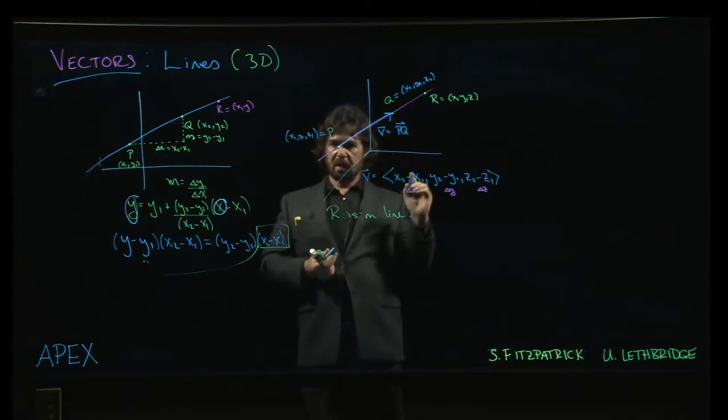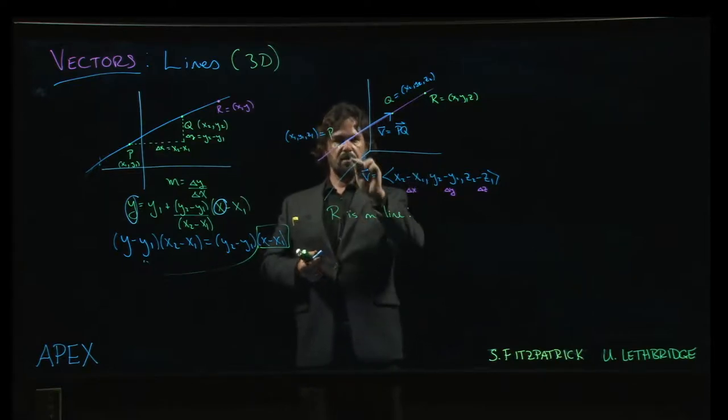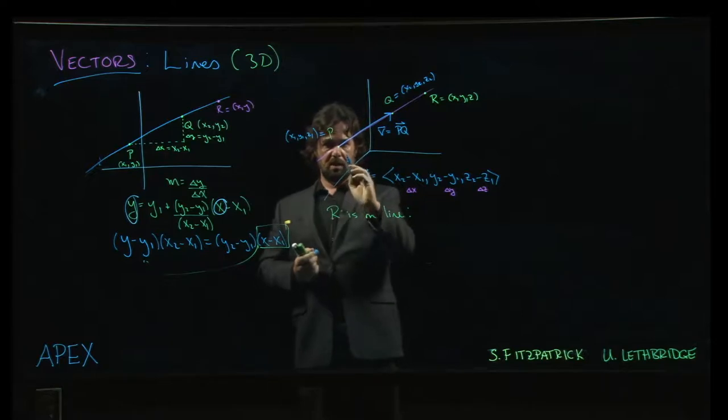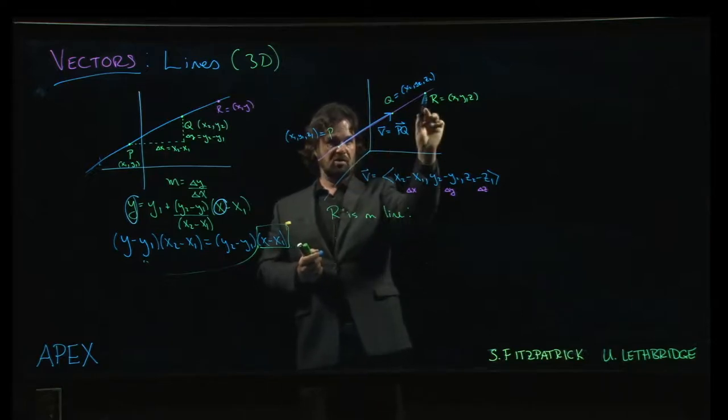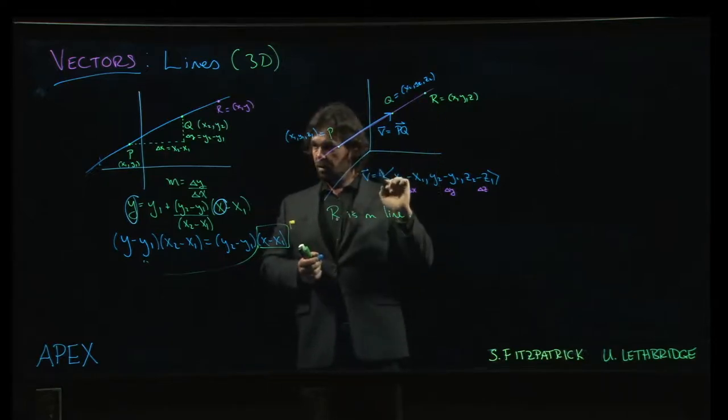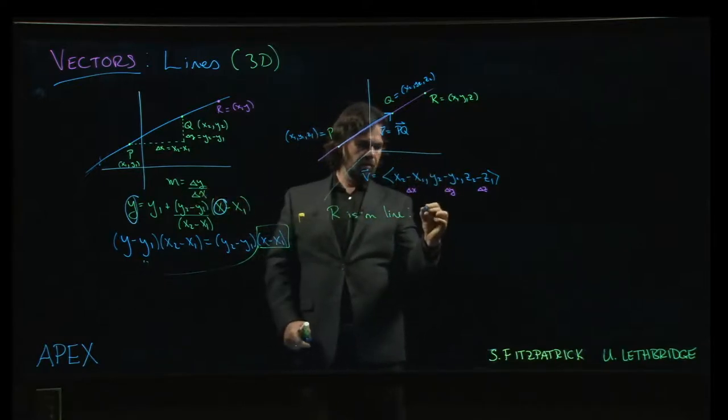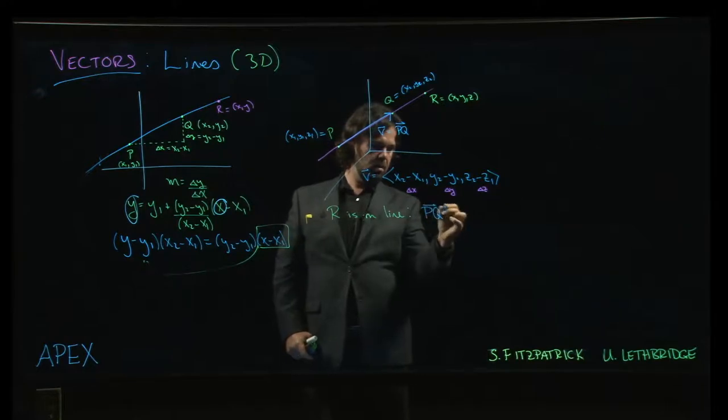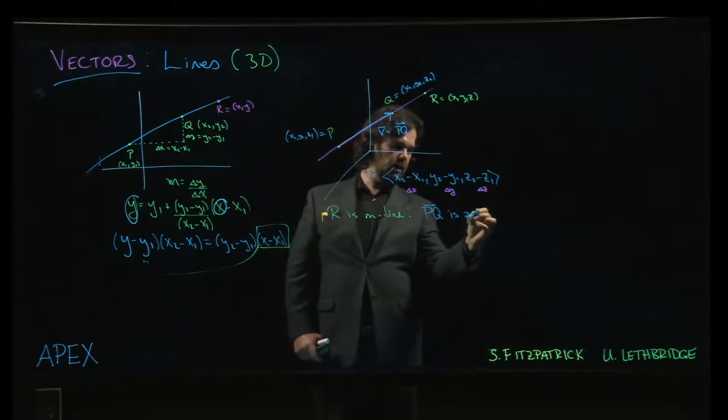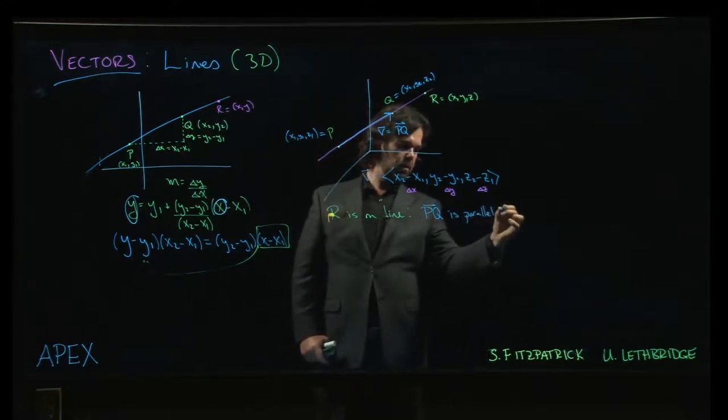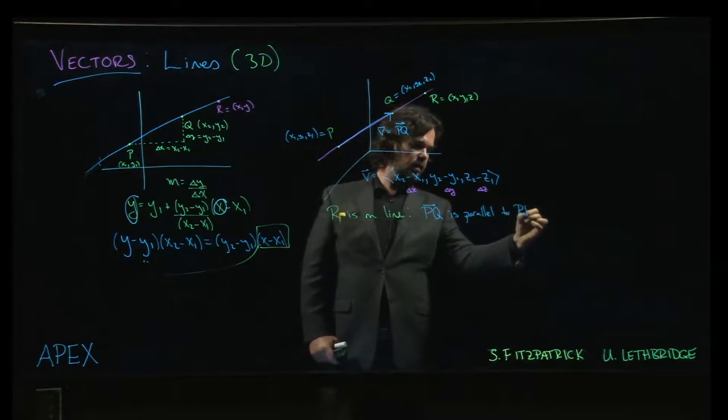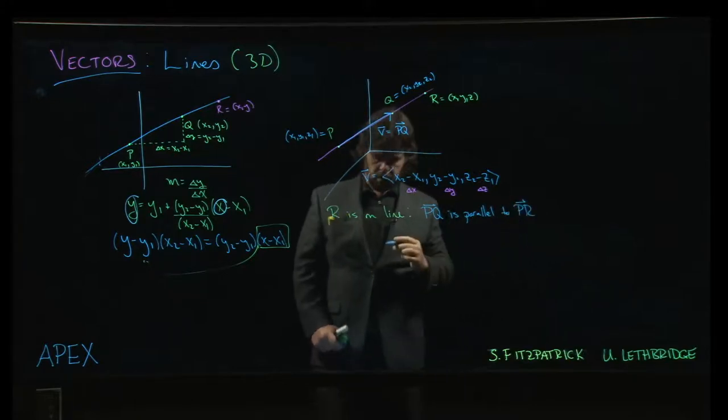We can do the same kind of thing here. Saying that r is on the line. Well, what that really means is that the vector from p to q should be in the same direction as the vector from p to r. That's the analog of slope here. Same slope, same direction. So, pq should be parallel to the vector pr.